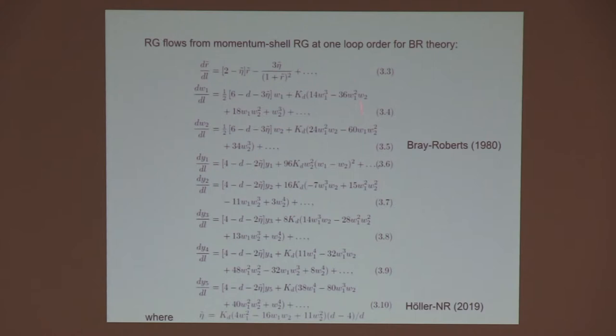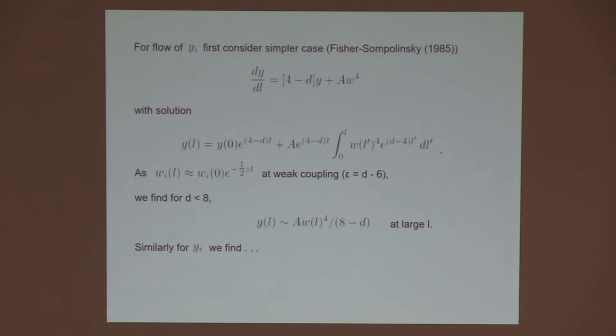We recovered the Bray-Roberts results ourselves. That's a check on our calculation. So now we want to think about these flows of these coefficients yi. Let's look at the simpler case first where we just have one of them and one coupling w. This is the analysis of Fisher and Sompolinsky. If we have the flow of one of these quartic couplings, the solution of this equation looks like this. Crucially, w is flowing to zero as L increases. If we're above six dimensions, epsilon is d minus 6. It's positive above six dimensions. If we're just at weak coupling, this is the form of the flow. So plug this in and do the integral. You find that as L goes to infinity, y of L is basically proportional to w to the fourth coming directly from this term here in the flow equations.